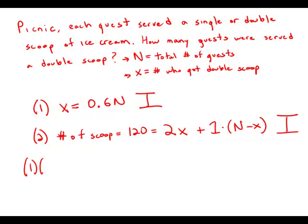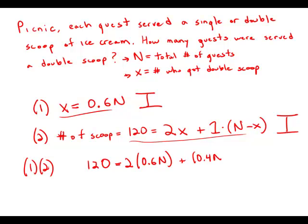But now we combine these statements. And what I'm going to do now, because we know both this and this, I'm going to take the equation from statement number two, but everywhere where there's an x, I'm going to substitute 0.6N. Plus, and then N minus 0.6N would be 0.4N. So the 60% who got a double scoop and the 40% who got a single scoop, and all these scoops together add up to 120.